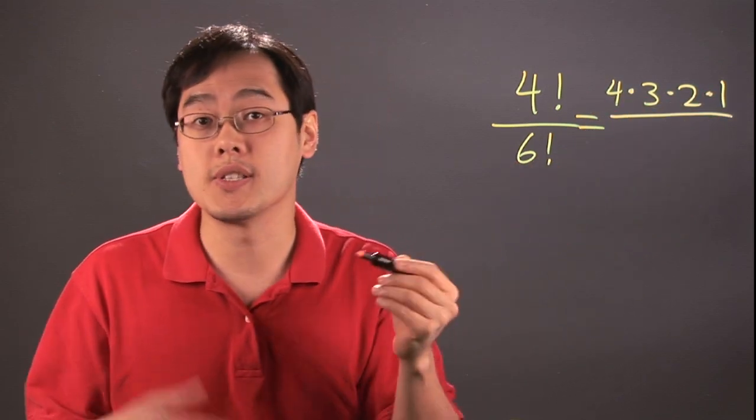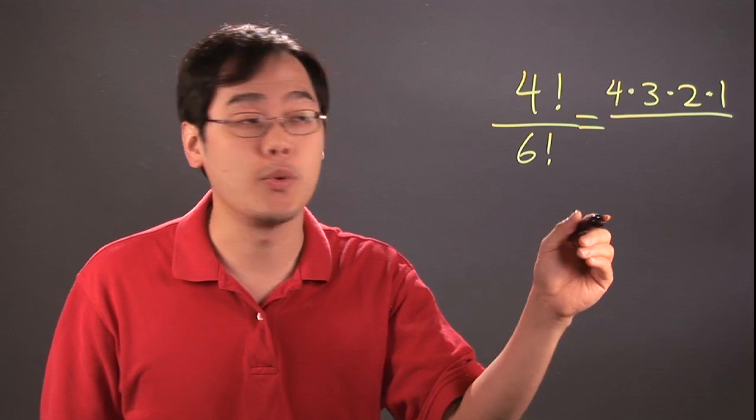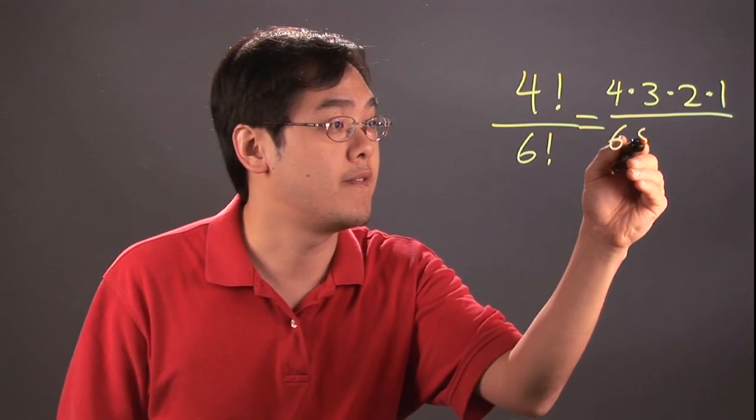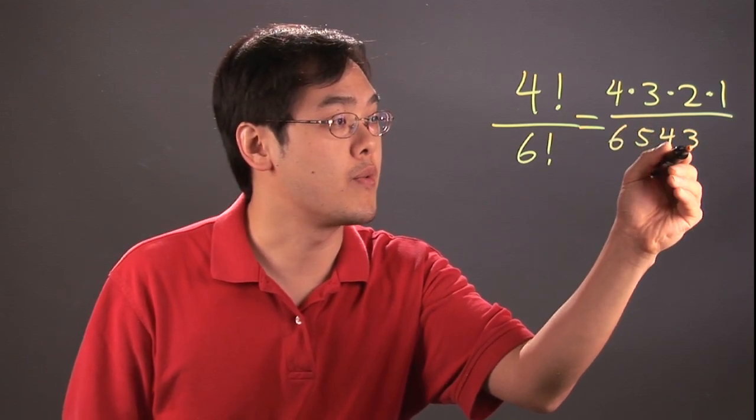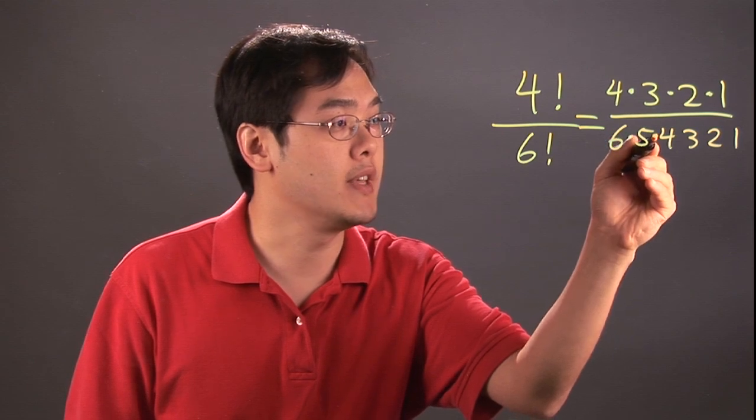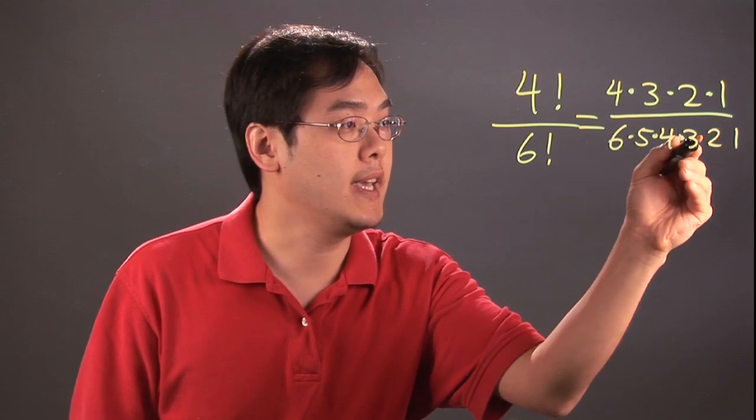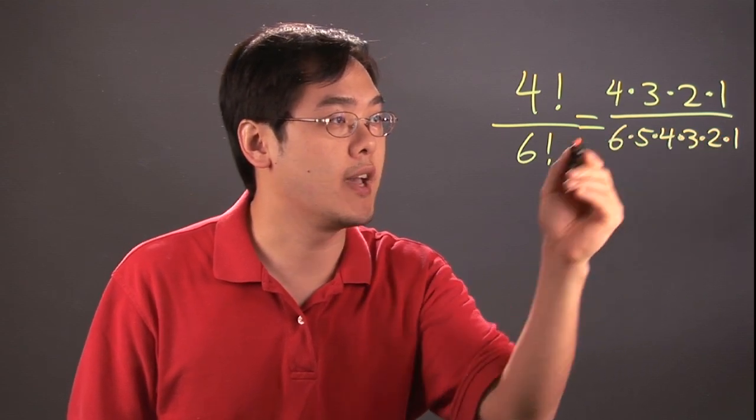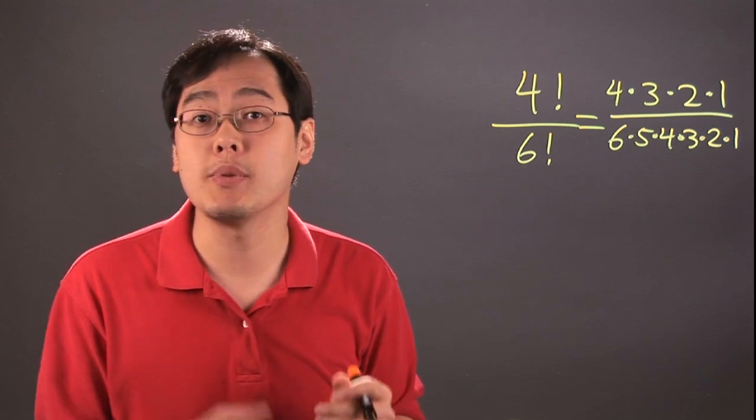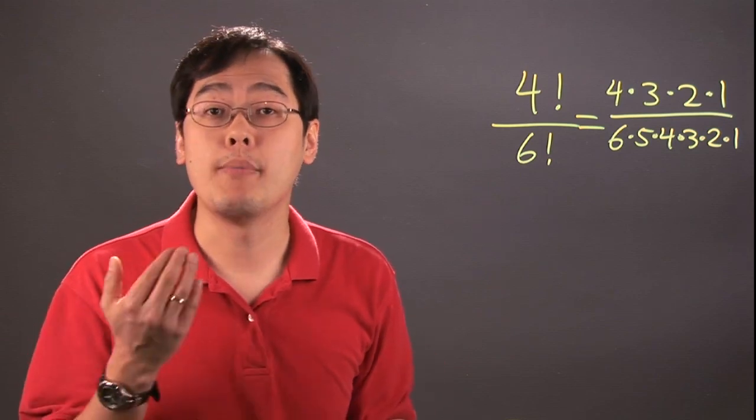6 factorial is the same thing. You start out with 6 and end with 1. So you have 6 times 5 times 4 times 3 times 2 times 1, and you're multiplying all of these. Now, you're not actually multiplying each numerator and denominator together. You're going to leave the numbers as is because you're going to make things easier by canceling.